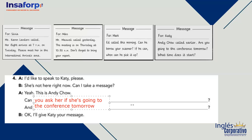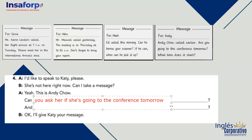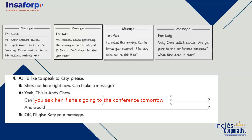Teacher, quick question — how do you know it's a girl? Because this message goes to Cathy, not Andy. Andy is the one calling, and we need to ask Cathy. That's why we have 'her.' Can you ask her if she's going to the conference tomorrow?